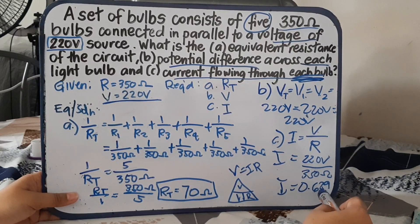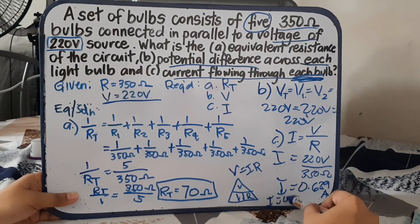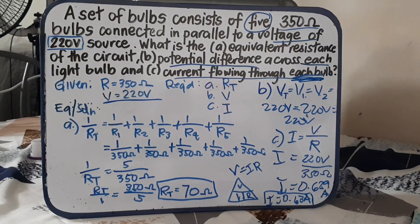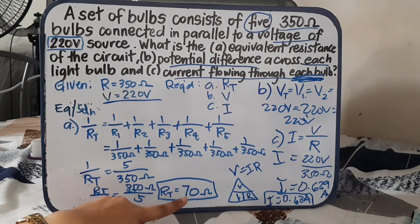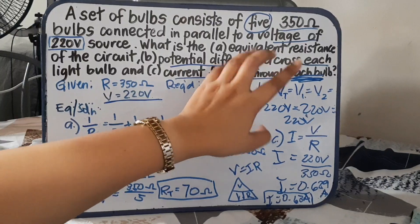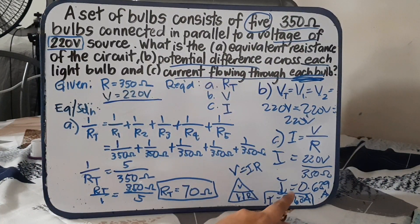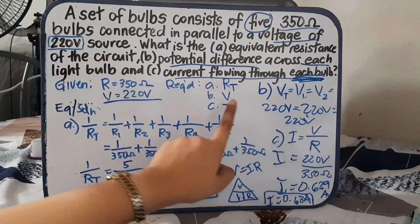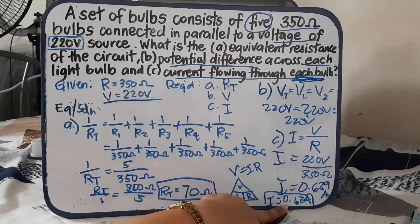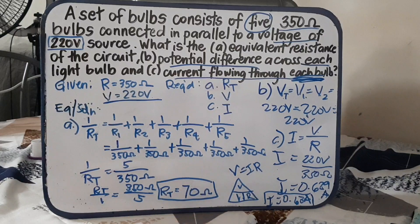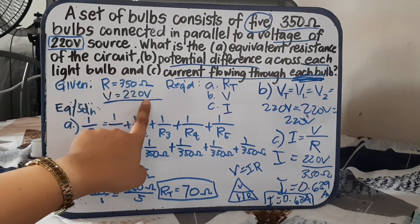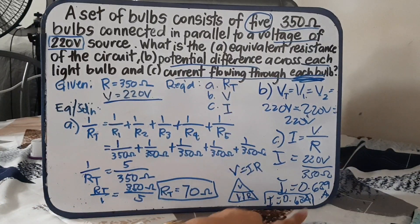If we round off, that is I is equivalent to 0.63 ampere. This is the result of our problem solving. Our total resistance is 70 ohms, our volts, since this is 220 volts, is equivalent to 220 for each one. Five bulbs, they each have 220 volts. And then our current, 220, which is the volts, divided by resistance of each bulb, which is 350, that's 0.629. So if we round off, it will become 0.63 ampere. Remember that our unit for resistance is ohms, our voltage is volt, and for I or current, we have A or ampere.